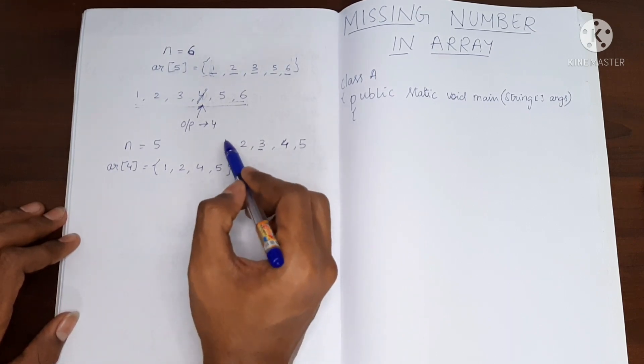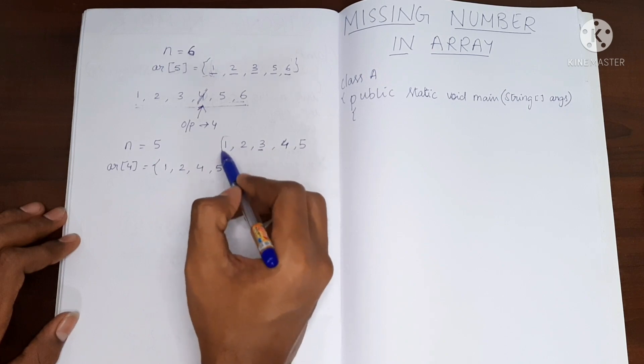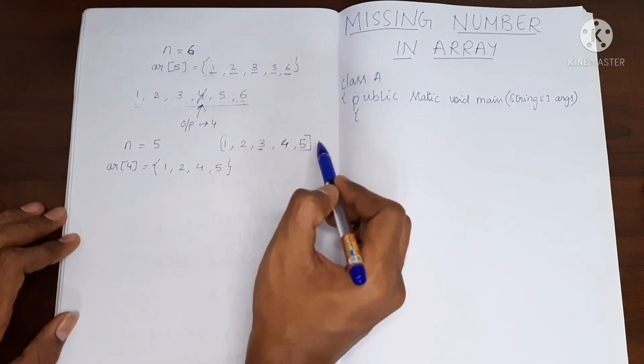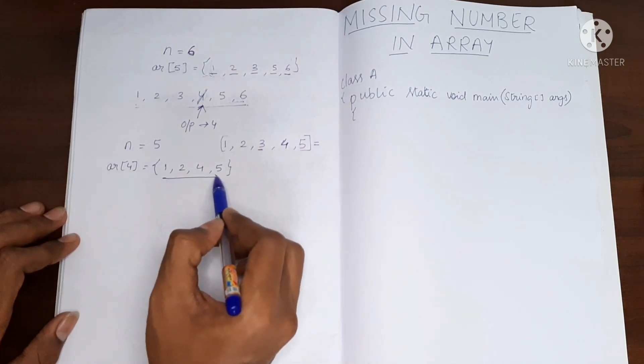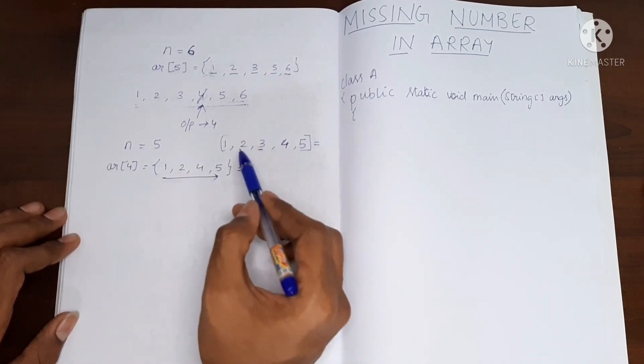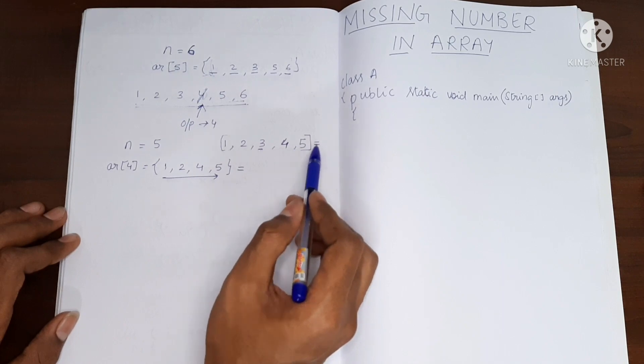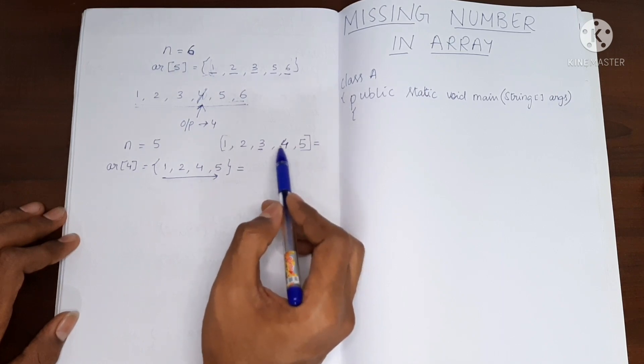Very simple approach is we are going to add all these things. We are going to add all of this and also we are going to add all of this. If we add all this, what will be the result?